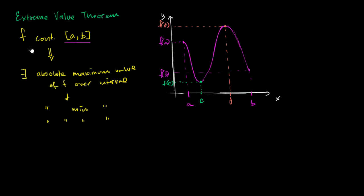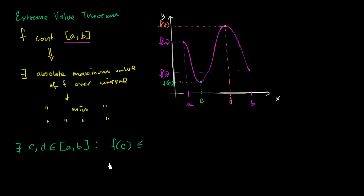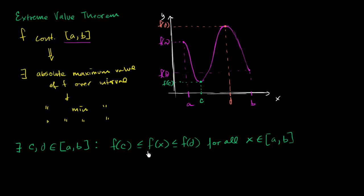Another way to state this theorem: if f is continuous over the interval, we could say there exists a c and d that are in the interval, such that f of c is less than or equal to f of x, which is less than or equal to f of d, for all x in the interval. So we're saying we hit our minimum value when x equals c and our maximum value when x equals d, and for all other x's in the interval, we are between those two values.